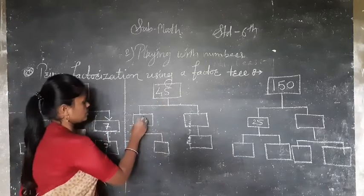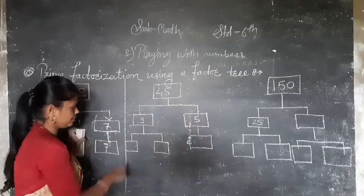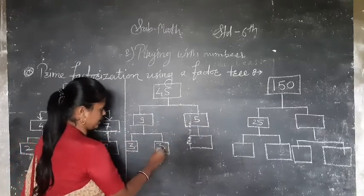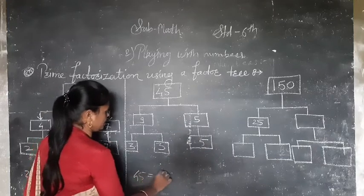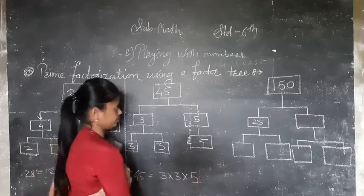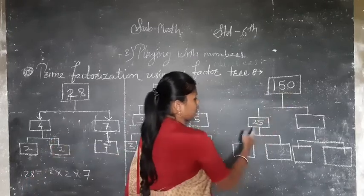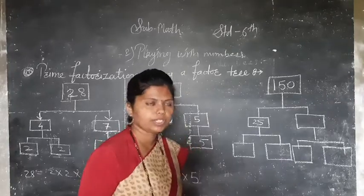Now for 45, I'll write 45 as 9 times 5. Then 9 becomes 3 times 3. So we have 45 equals 3 times 3 times 5. Most students get confused about how to find this path.